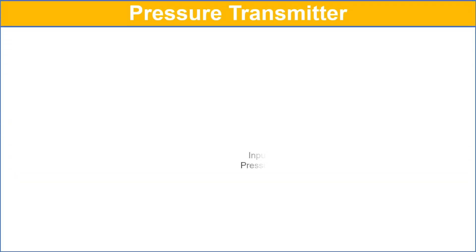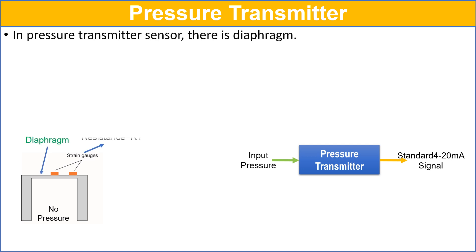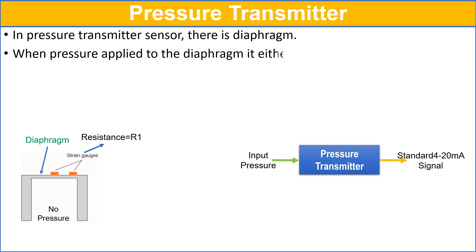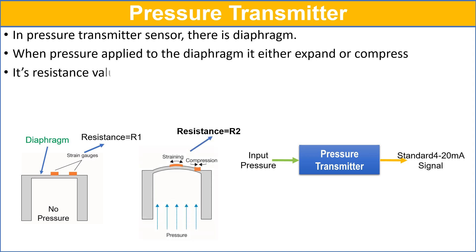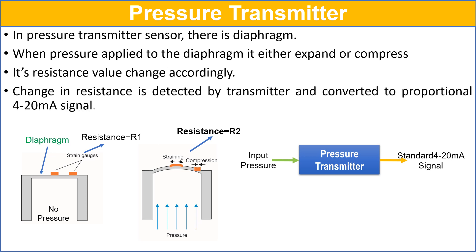Pressure transmitters are used to measure the pressure of industrial processes. In the pressure transmitter sensor, there is a diaphragm. When pressure is applied to the diaphragm, it either expands or compresses and its resistance value changes accordingly. The change in resistance is detected by the transmitter and converted to the proportional 4 to 20 milliampere signal.